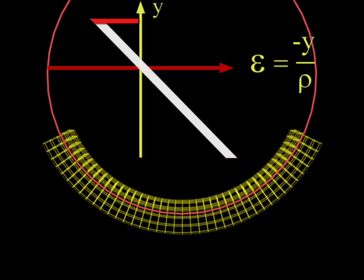In this case, the strain above the neutral axis is negative, and the strain below is positive.